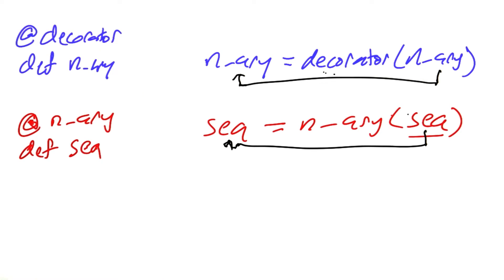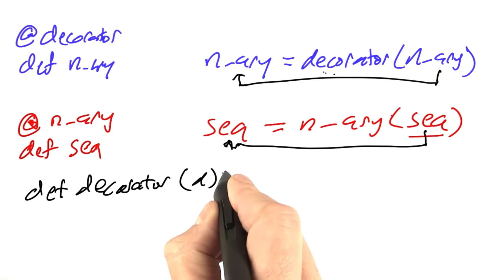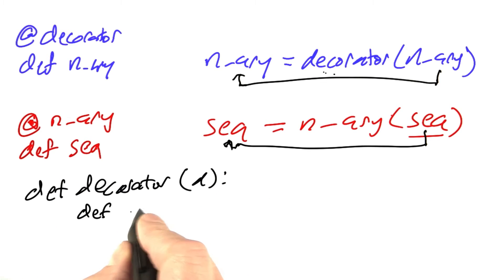Now let's see if we can write decorator so that it does those two updates. Let's define decorator. It takes an argument d, which is a function. Then we'll call the function we're going to return underscore d, and that takes a function as input.